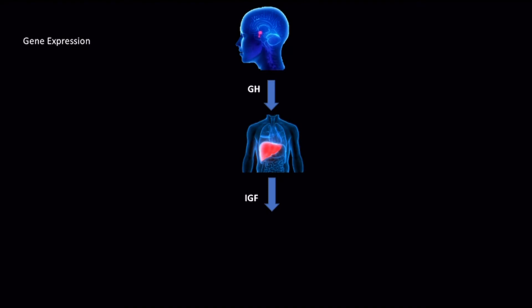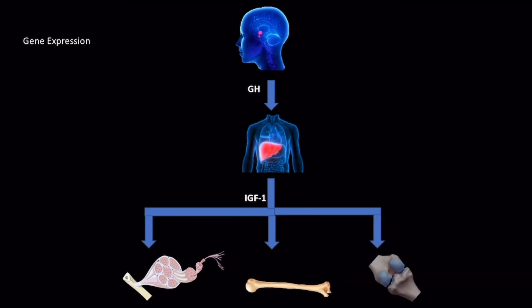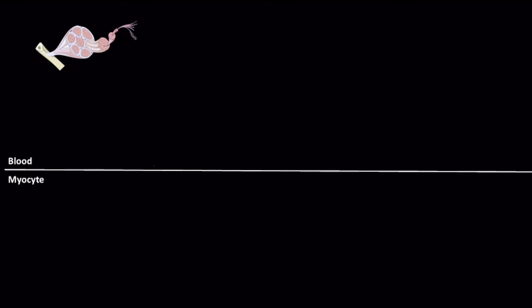IGF-1, secreted from the liver, is transported through the blood and acts on skeletal muscle, bone, and cartilage, causing them to produce their own IGF-1. In skeletal muscle, the IGF-1 secreted by the myocytes acts on the very same myocytes that secreted it as well as on neighboring myocytes.